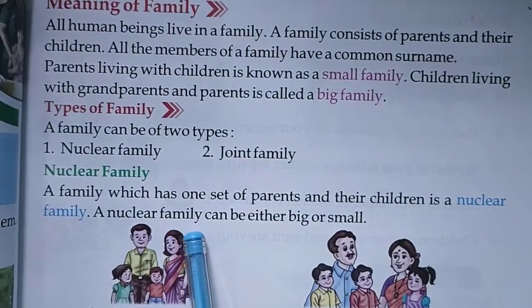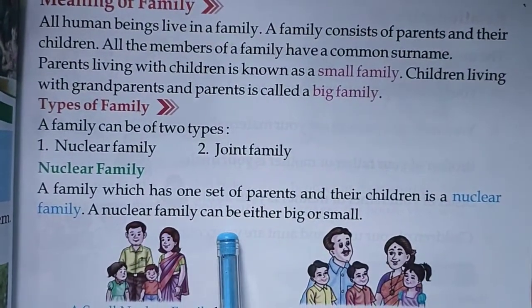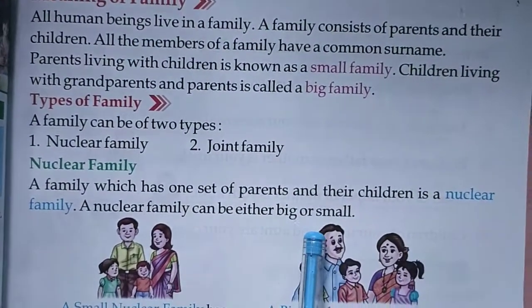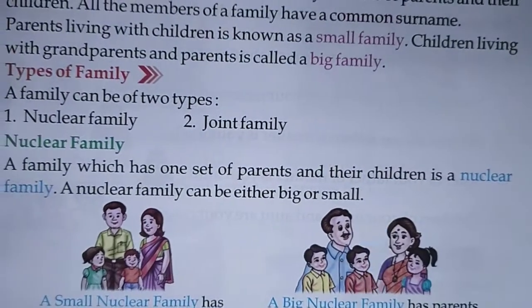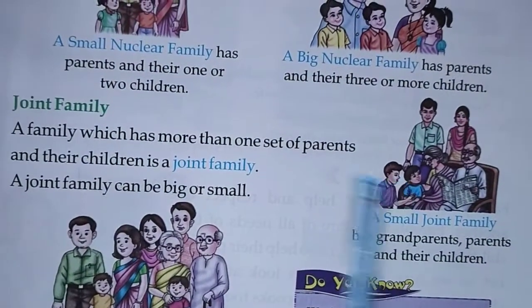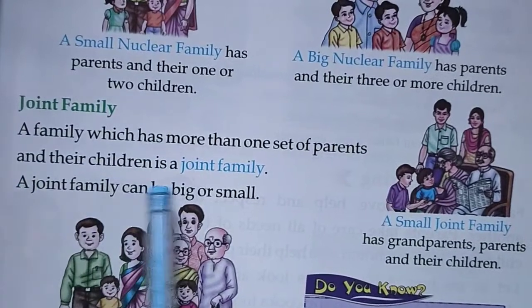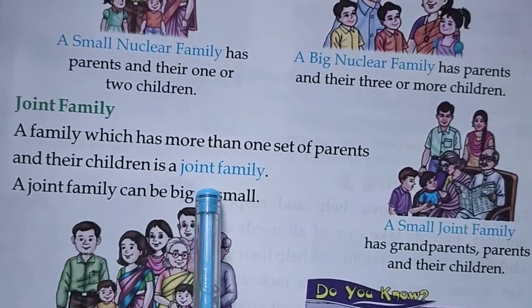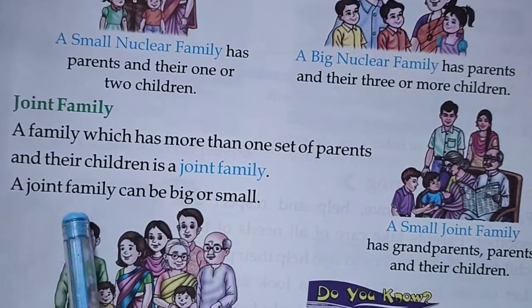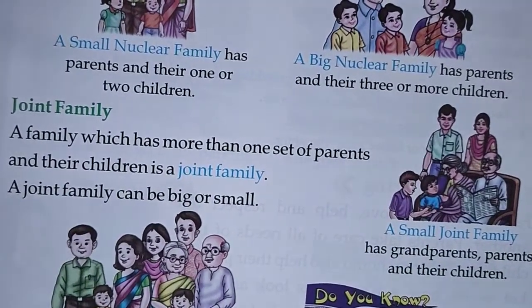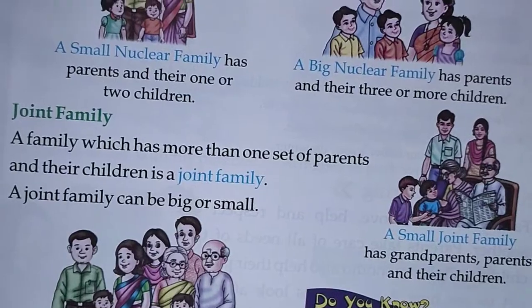A nuclear family can be either big or small. A joint family: a family which has more than one set of parents and their children is a joint family. A joint family can also be big or small.